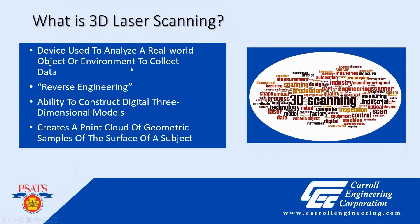So what is laser scanning? It's a device used to analyze a real-world object or environment to collect data. It could be used for reverse engineering, gives you the ability to construct digital 3D models, and creates a point cloud — a geometric sample of the earth's surface or a particular subject. 3D laser scans involve much more advanced technology than when it first came out in the 1960s. Present-day procedures use laser beams, advanced sensors, GPS, inertial measurement units (IMUs), receiver electronics, and photo detectors. Using all these components, the scanner can calculate accurate coordinates and surfaces of structures.